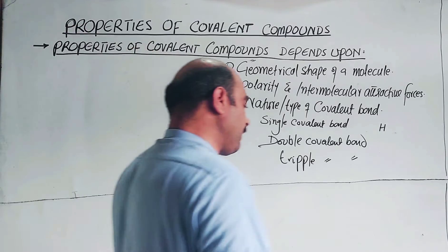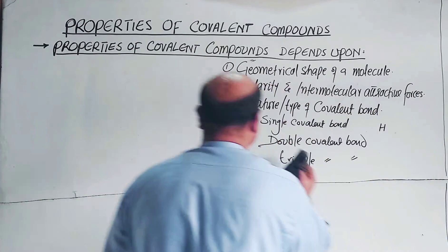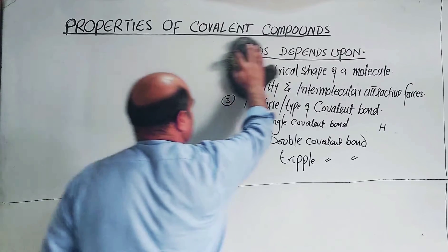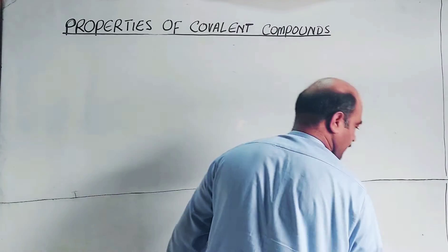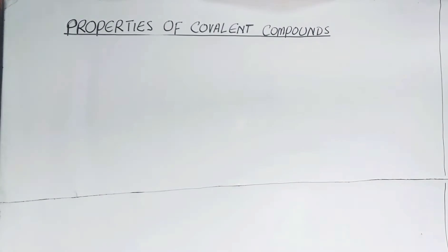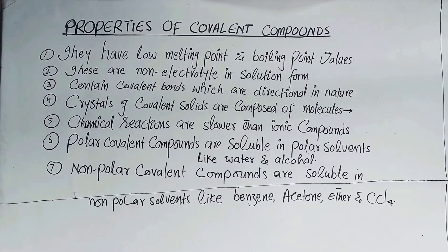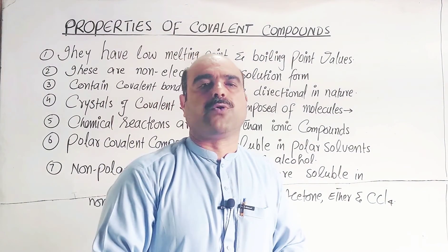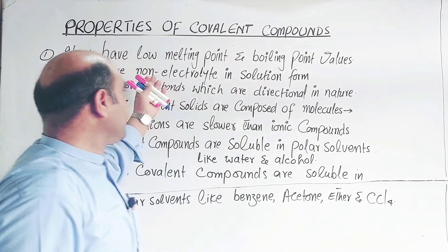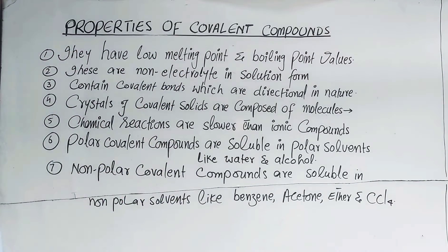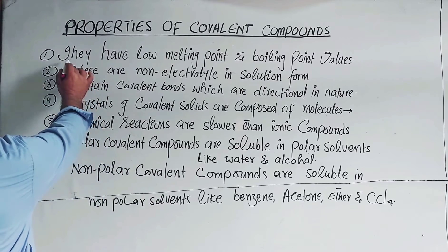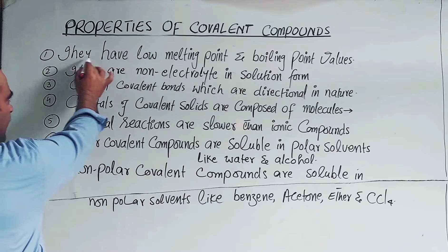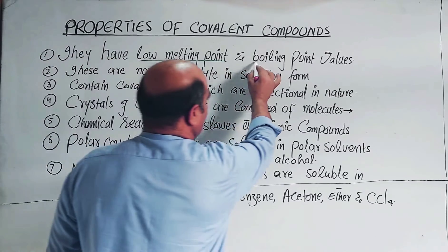So students, these are the general characteristic properties of covalent compounds. Now let's go forward towards the general properties of covalent compounds. The first property: covalent compounds have low melting point and low boiling point values.